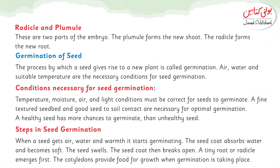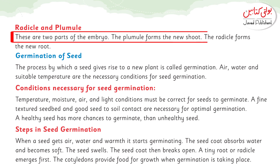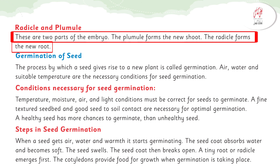Let's talk about the radicle and plumule. These are two parts of the embryo. The plumule forms the new shoot and the radicle forms the new root. The plumule will germinate new shoots and the radicle will originate new roots.